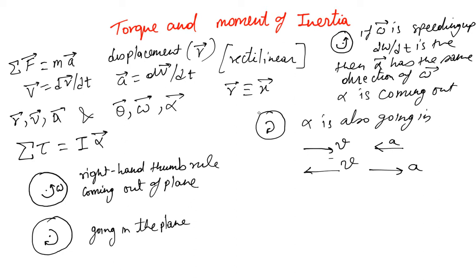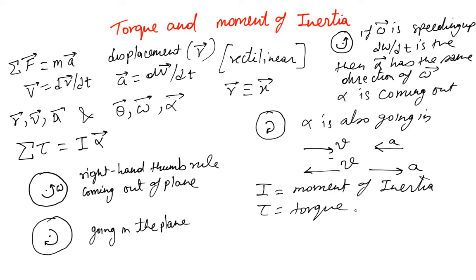So the direction of alpha has been defined. What is I? I is called moment of inertia, and tau is called torque. These are new things, but this equation is similar to Newton's second law — not exactly the same, but you can draw analogies between the two.